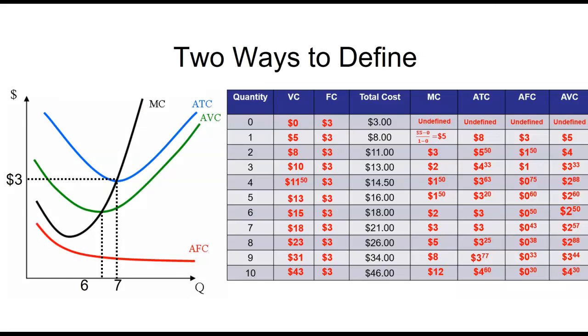So again, the takeaway is there are two ways of looking at these cost curves. There's the data table, you see this on the right, and if you map all that out, you get the graph on the left. They say the same thing, just in two different versions. All right. Until next time. Bye.